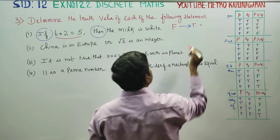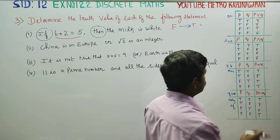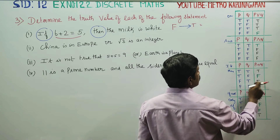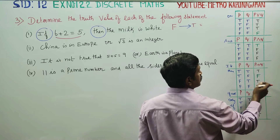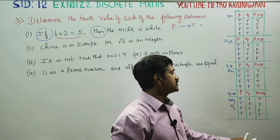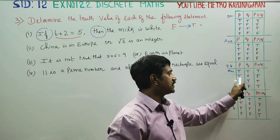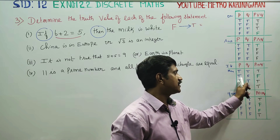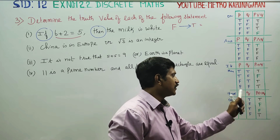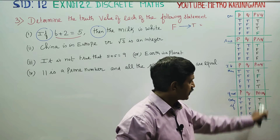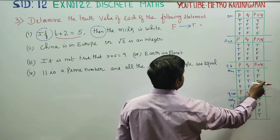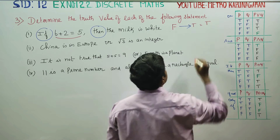Now for if-then: you would know that if the first part (p) is false and the second part (q) is true, or if p is false, then the answer for p→q is true. This is the solution.